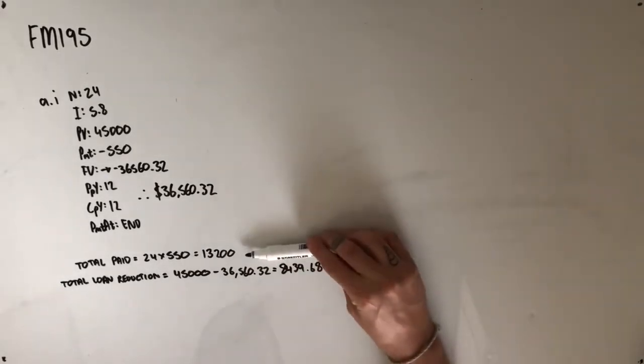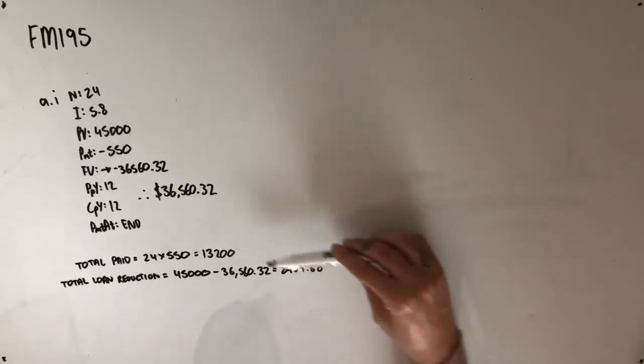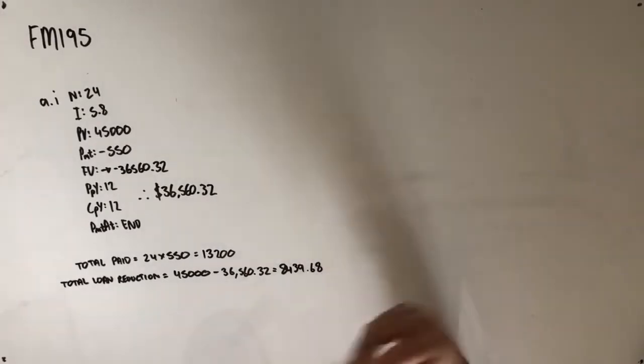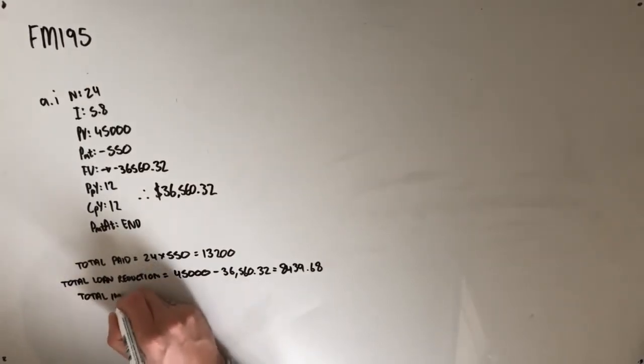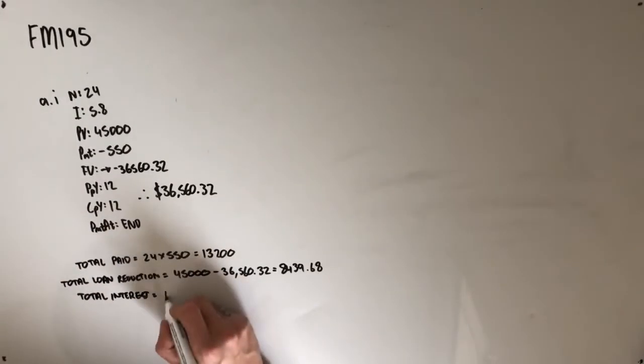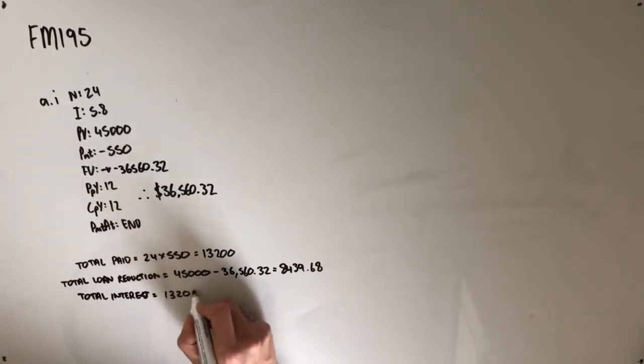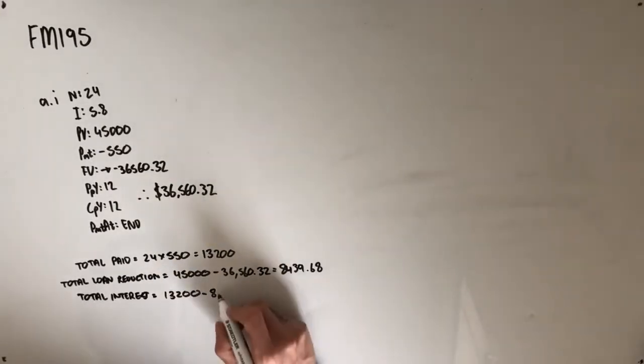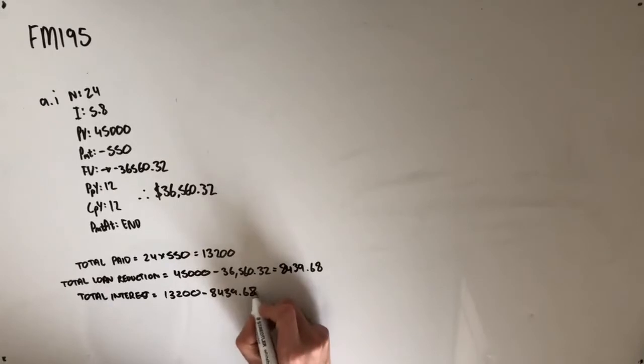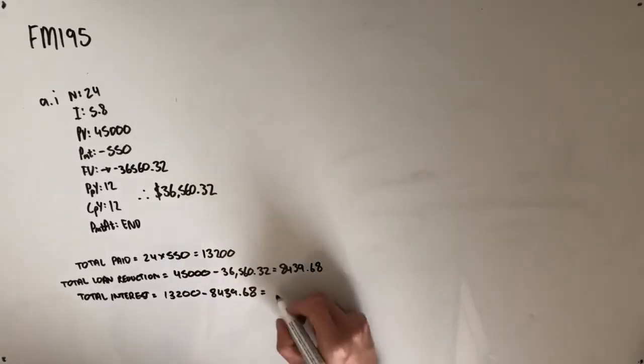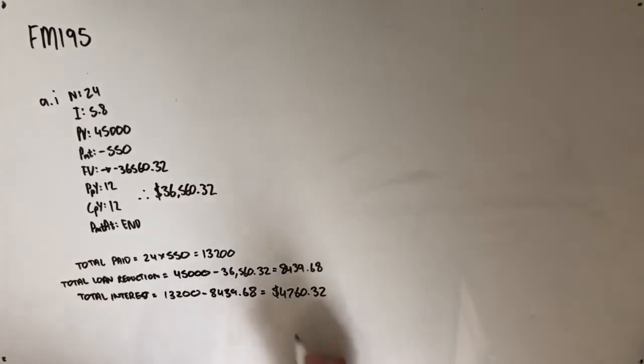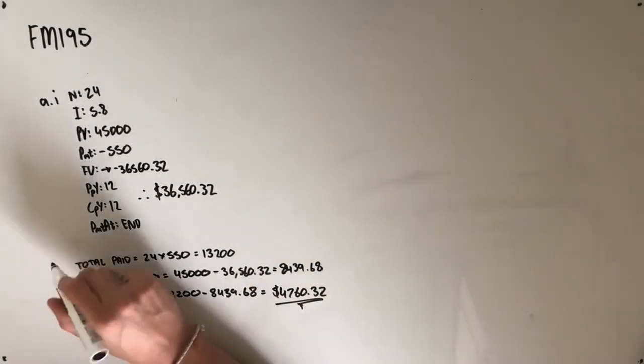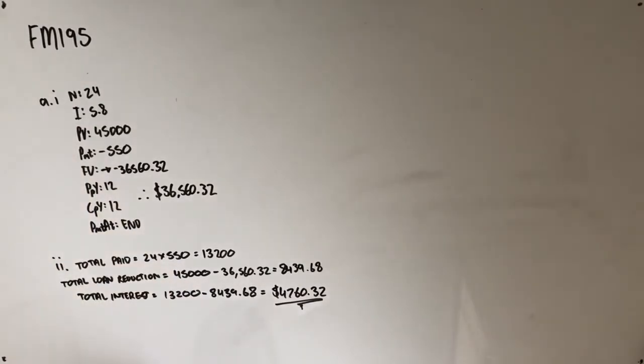But in total he's paid $13,200, so finding the difference between these two will leave us with the interest that the bank has taken. So the total interest is $13,200 minus $8,439.68, which of course is equal to $4,760.32. So that's part II.